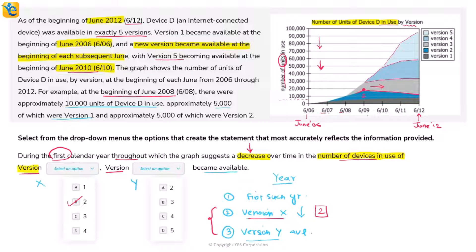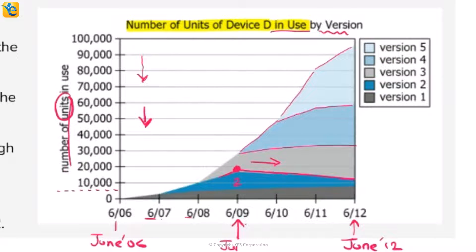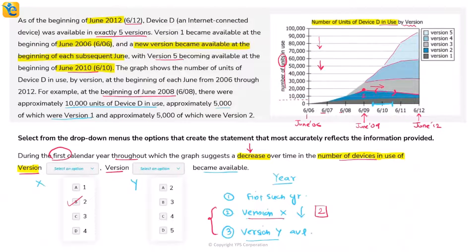We need the calendar year throughout which Version 2 shows a decrease. The first decrease happened at the beginning of June 2009, but that's not the entire calendar year of 2009, which starts in January. In 2010, from January through December, Version 2 is still on a decline throughout this period. So the first calendar year is 2010.